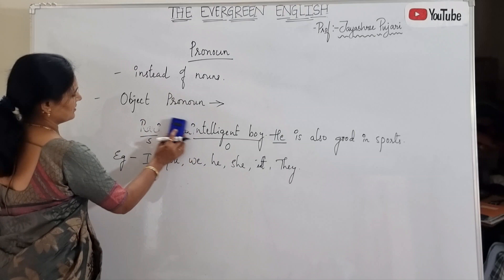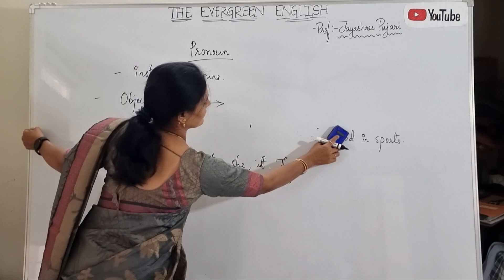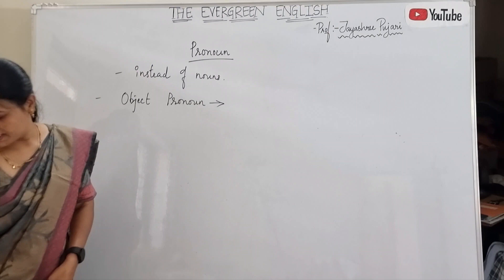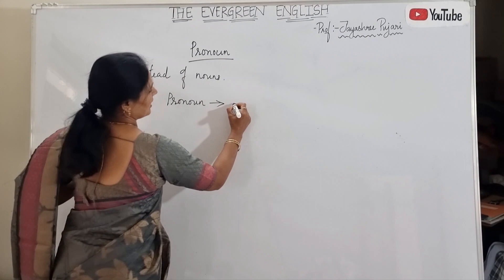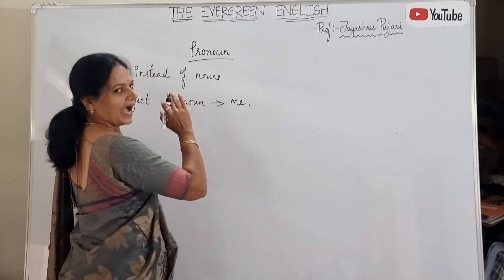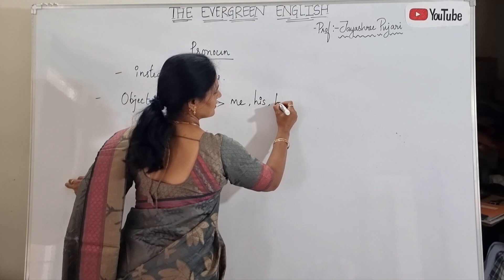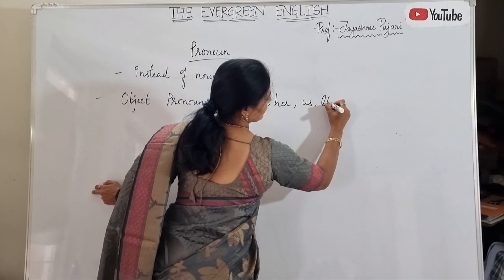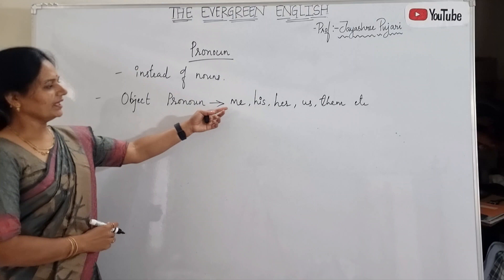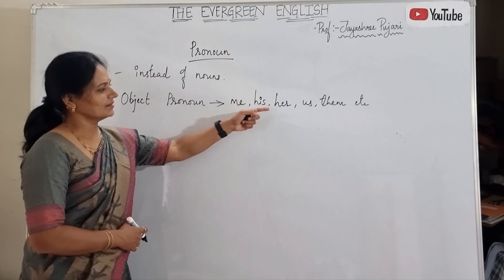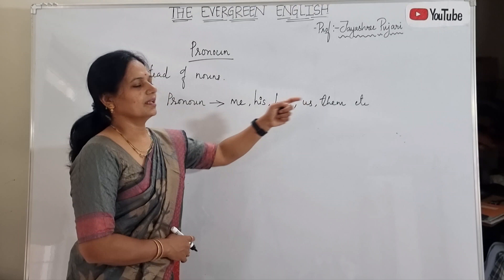Examples of object pronouns: 'I' is the subject pronoun, and 'me' is the object pronoun. Subject 'I' changes to object 'me.' 'You' stays as 'you.' 'He' changes to 'him.' 'She' changes to 'her.' 'We' changes to 'us.' 'They' changes to 'them.'